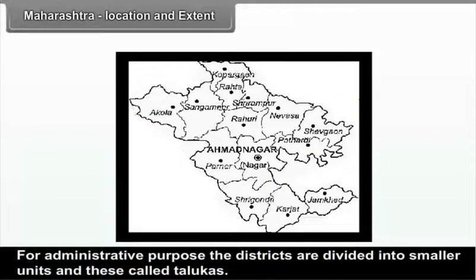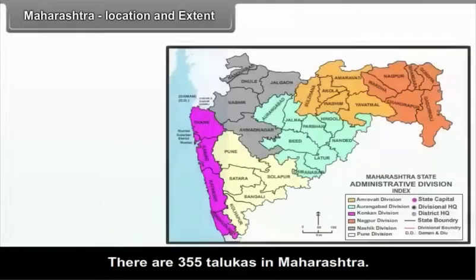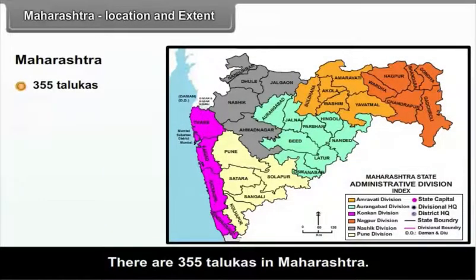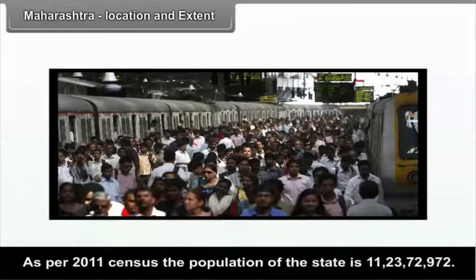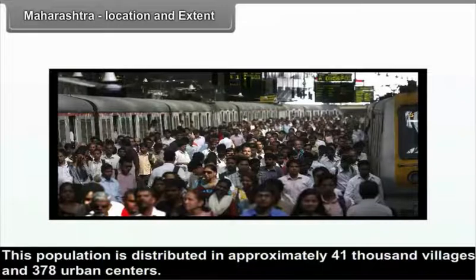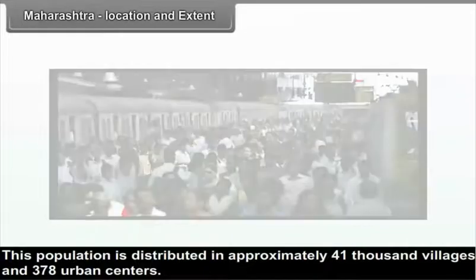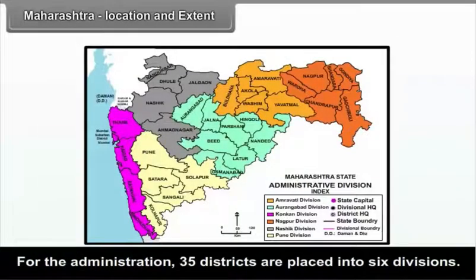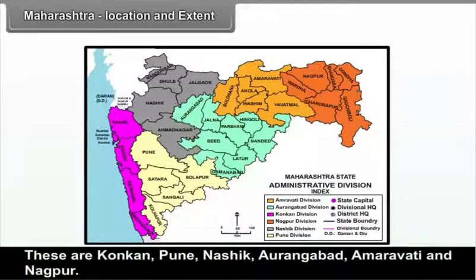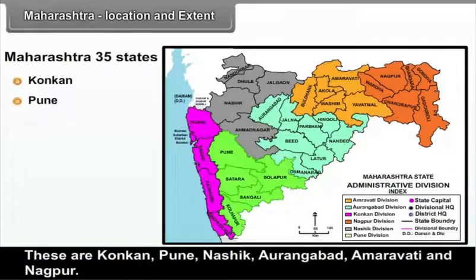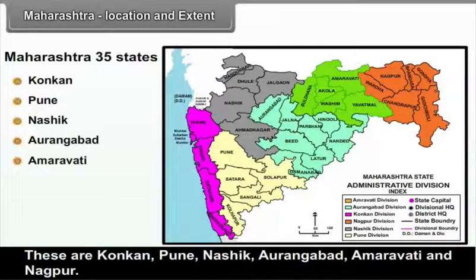For administrative purposes, the districts are divided into smaller units called talukas. There are 355 talukas in Maharashtra. As per the 2011 census, the population of the state is 11 crores 23,072,972. This population is distributed in approximately 41,000 villages and 378 urban centers. For administration, the 35 districts are placed into six divisions: Konkan, Pune, Nasik, Aurangabad, Amravati and Nagpur.